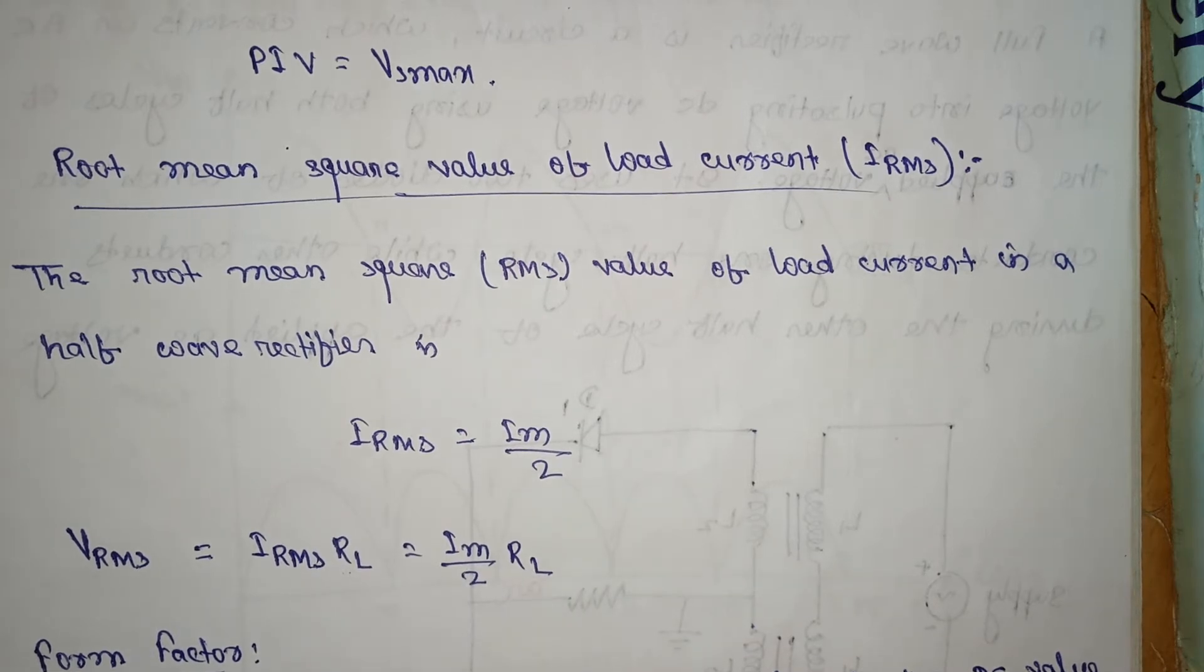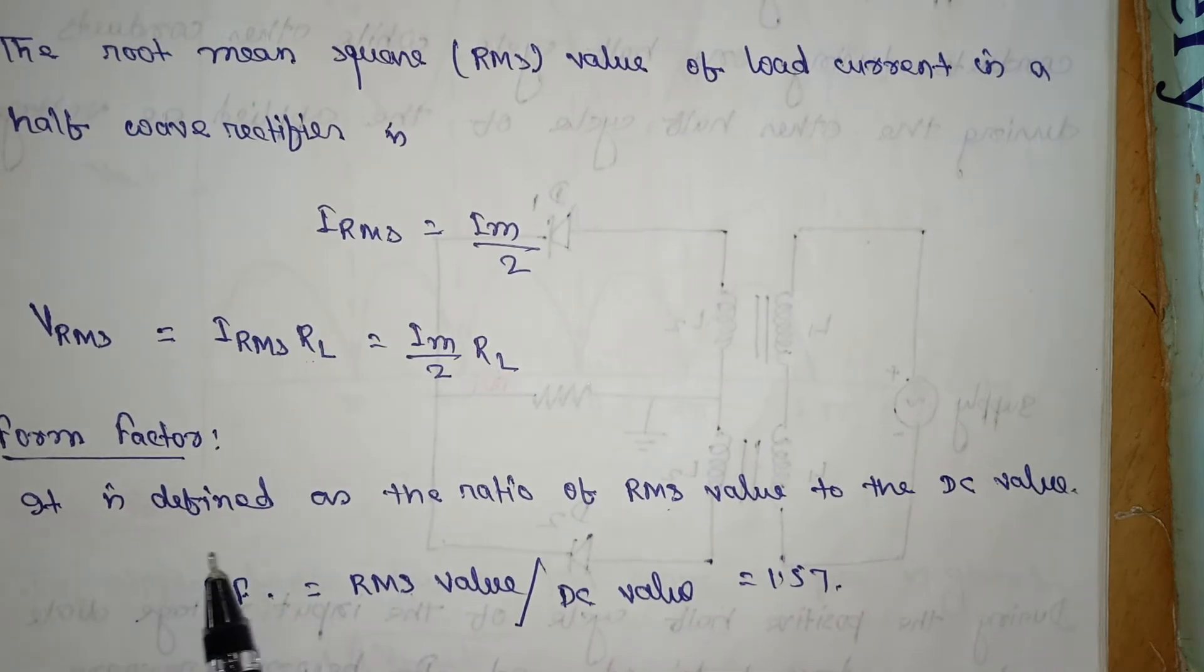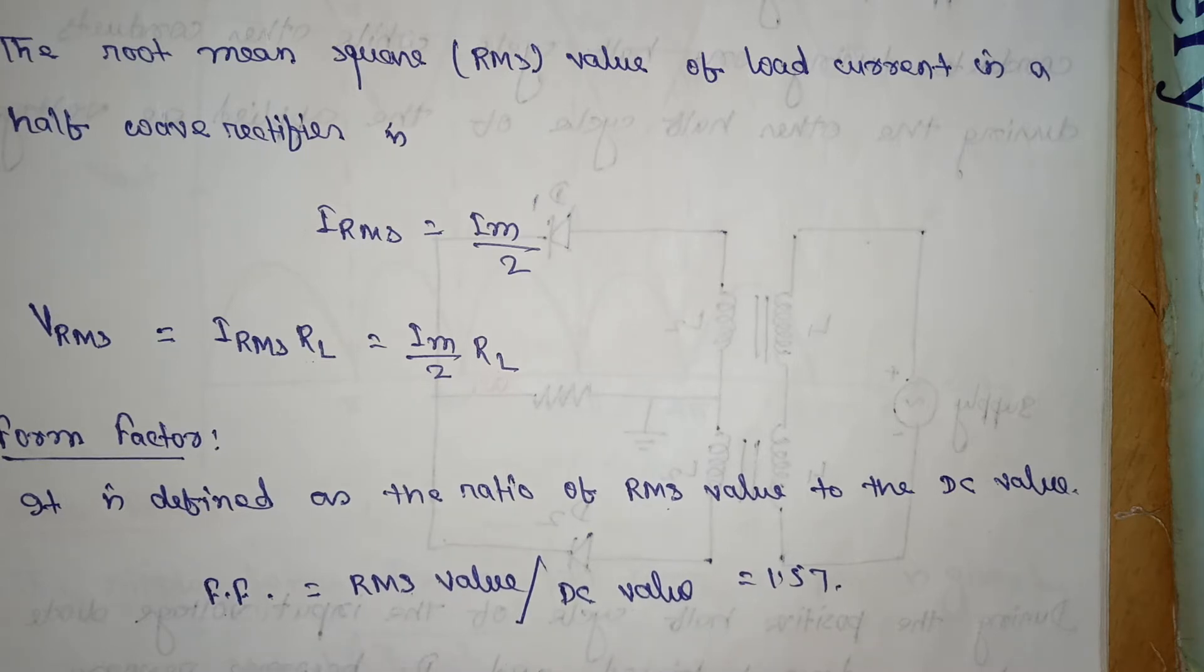Next, what is form factor? It is defined as the ratio of RMS value to the DC value. Form factor is equal to RMS by DC value, that is 1.57, a constant value.